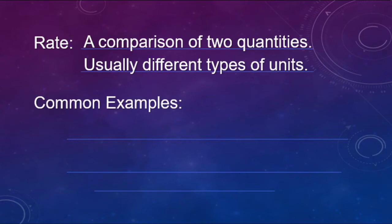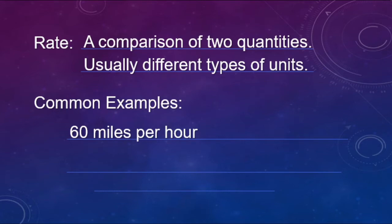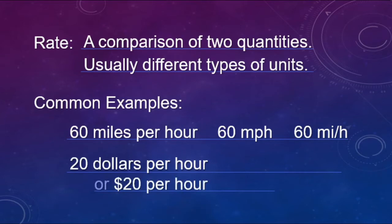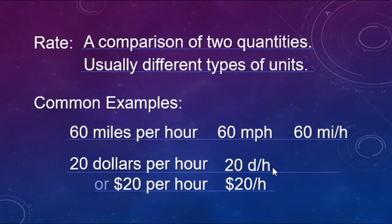Some examples you might see of rate: 60 miles per hour. The miles and the hours are the different types of units. On street signs you might see it written as MPH. In math, the notation we use is a slash — so 60 miles per hour. Another example: $20 per hour, which you might see written as $20/hr.